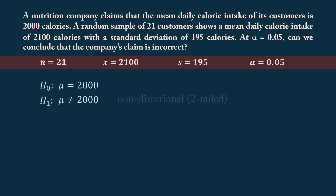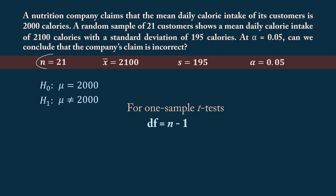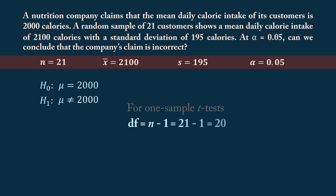For a one-sample t-test, the degrees of freedom df are calculated as the sample size n minus 1. This is because we lose one degree of freedom when we estimate the population mean from the sample data. Since the sample size is 21, we have 20 degrees of freedom for this test.